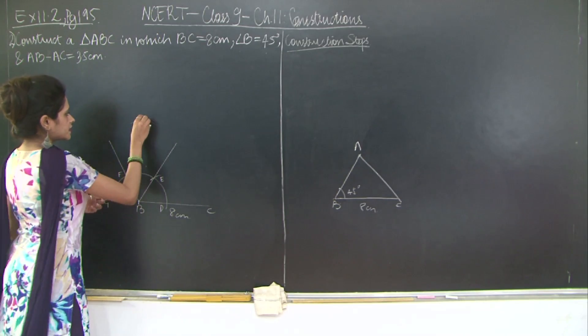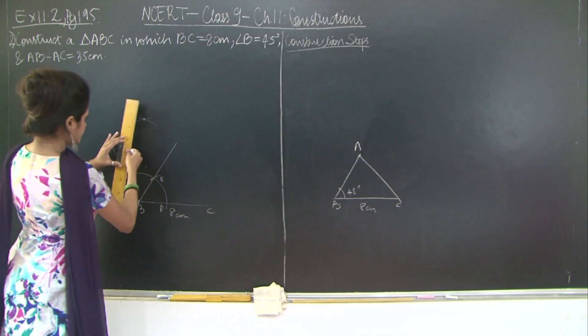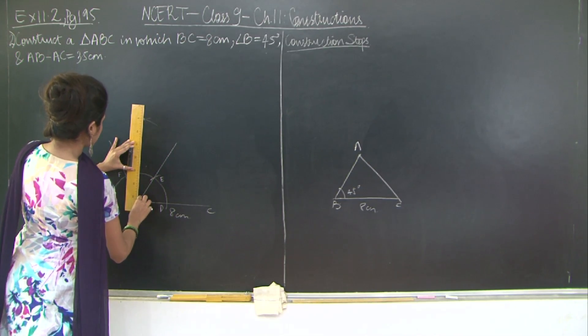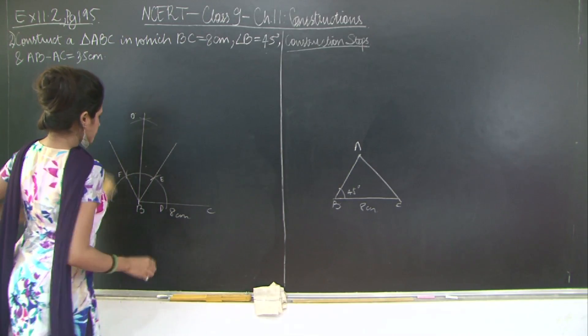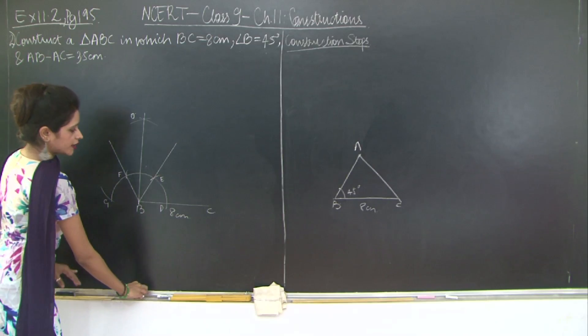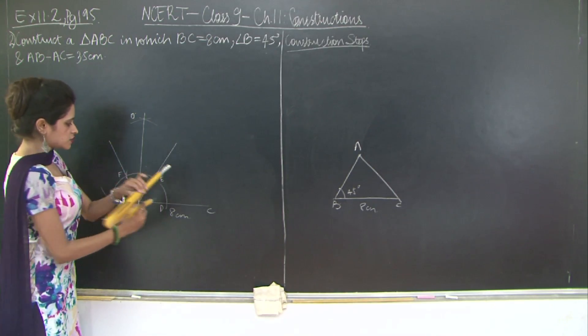Let this point of intersection be O. I will join OB. So this angle out here, OBC, is 90 degrees. Now what I'm going to do is I'm going to bisect this angle, that is OBE.